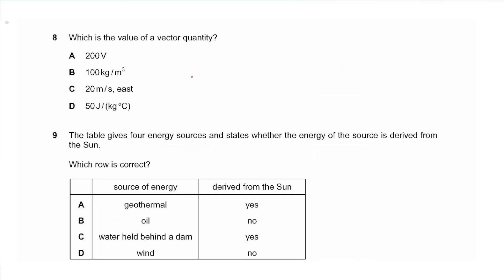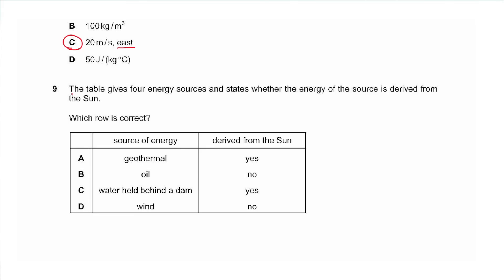Question 8 asks which is the value of a vector quantity. 200 volts, 100 kilograms per meter cubed, 20 meters per second east — with direction — that would be the vector, so the answer is C. Question 9 gives four energy sources. Geothermal energy is derived from the planet, not the sun. Oil is derived from the sun. Water held behind a dam — from the sun. Wind — from the sun. So the answer for wind should be yes, making the answer C.